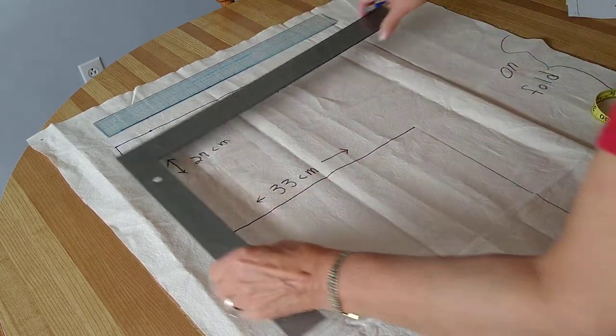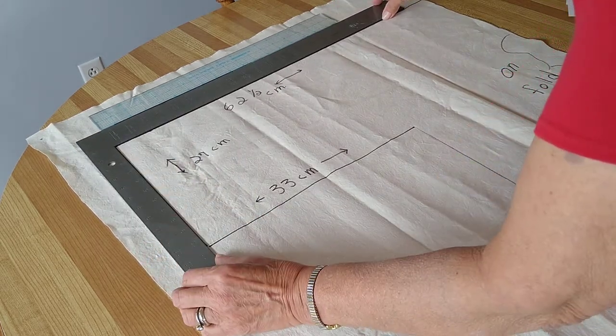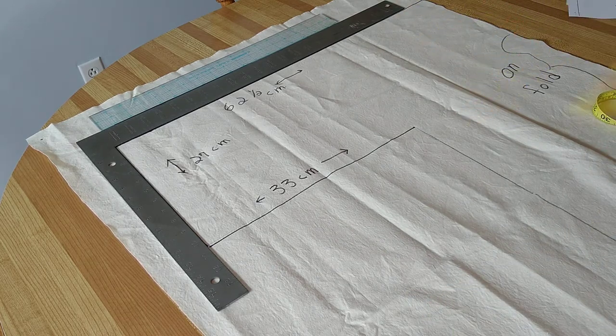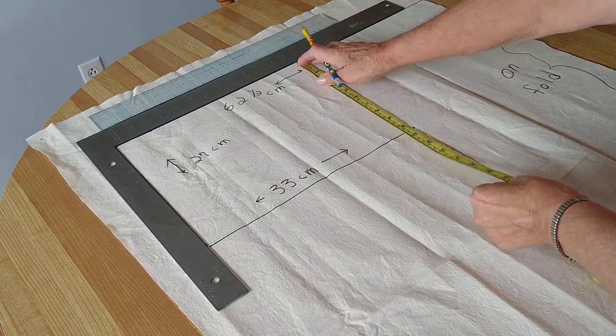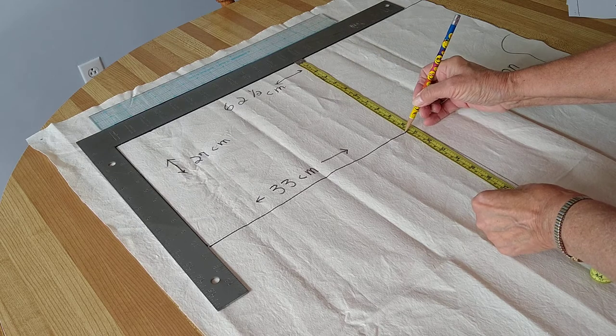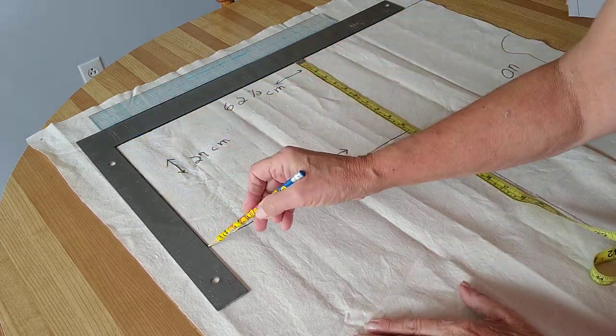Then we will turn our t-square and we're going to make this line 27 centimeters down. I'm going to do it over here as well, put a dot down here and then run your line 27 centimeters.